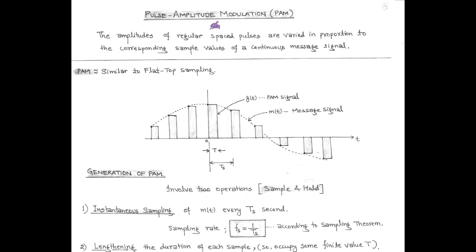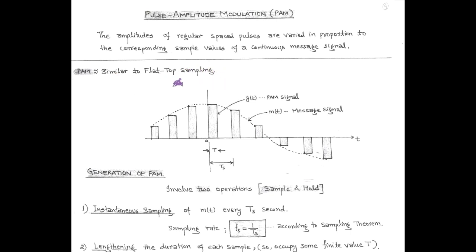Now we first talk about pulse amplitude modulation, that is PAM. In PAM, the amplitude of continuously regularly spaced pulses are varied in proportion to the corresponding sample values of the message signal. PAM process is similar to the flat top sampling method. The top of each pulse remains flat by using a sample and hold circuit. Here, G(t) is the PAM signal corresponding to the amplitude level of modulating signal m(t), having pulse width equal to capital T and sampling period T_S.